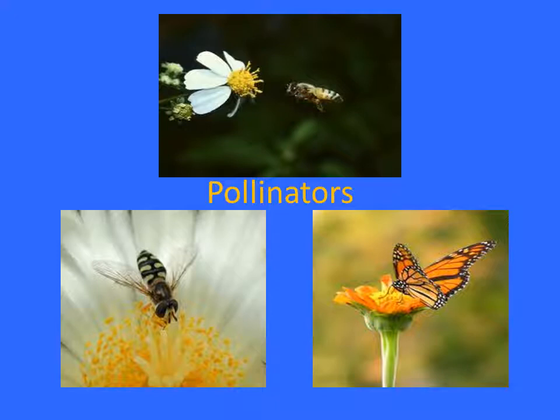Honeybees and butterflies are very helpful in pollination. Pollination is a process in which pollen from the male plant is transferred to the stigma of the female plant, which helps in fertilization — and that is why fruits and seeds develop from the flower. Insects are important pollinators because they carry the pollen from one plant to another.